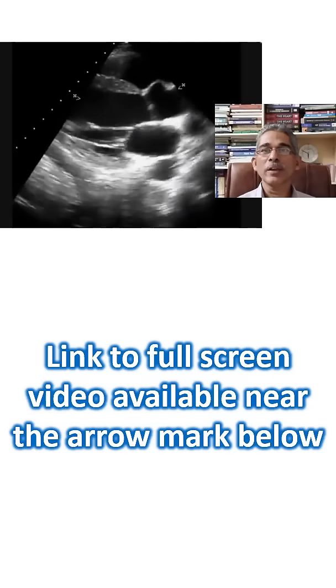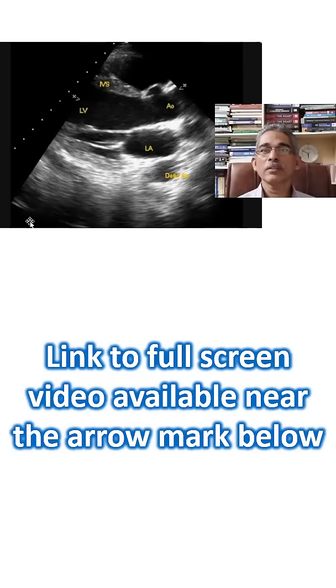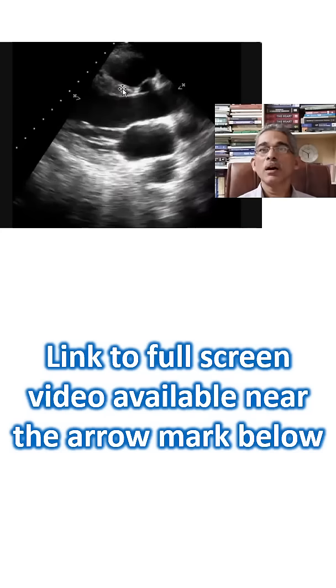You can see it moving now. This is the interventricular septum, and I will freeze that view for you. This is the interventricular septum, right ventricular outflow tract, and anterior surface of the right ventricle.